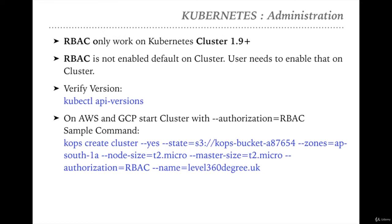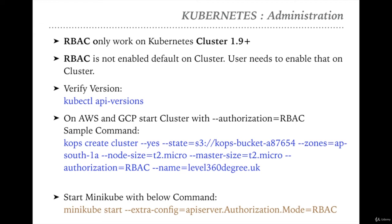After defining '--authorization=RBAC' and the cluster name, you don't need to explain this command again as we have executed it multiple times in previous lectures. If you are working on an existing AWS or GCP cluster, you just need to edit your cluster with this command and restart it. If you're using Minikube, start it with: 'minikube start --extra-config=apiserver.authorization.mode=RBAC'.